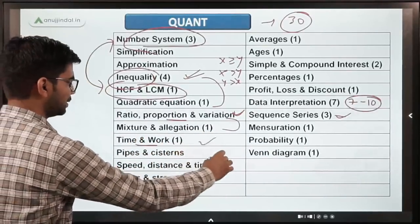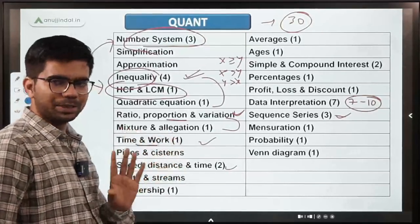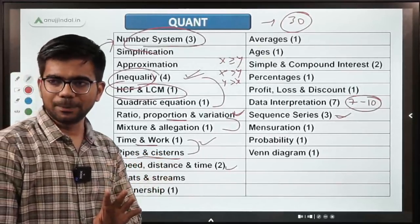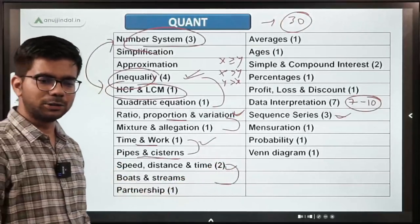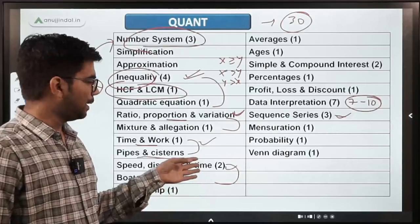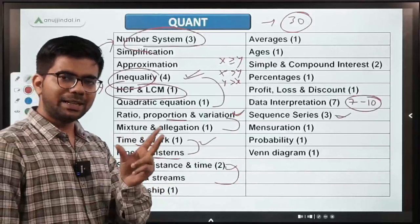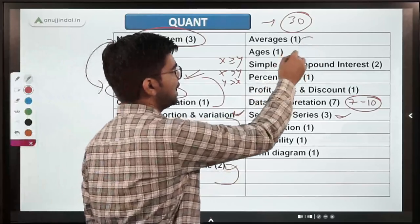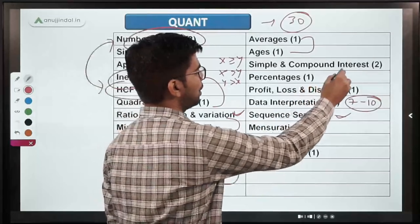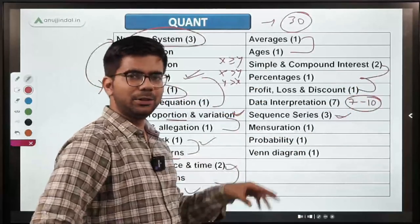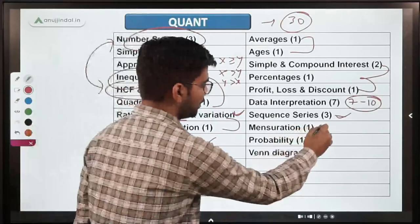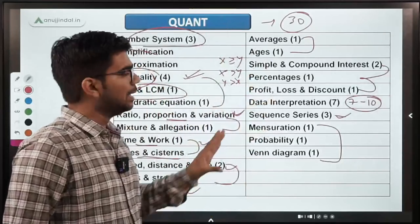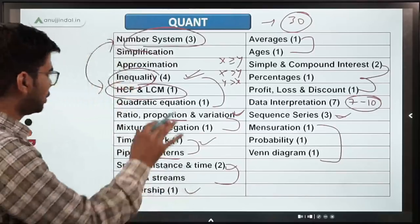Time and work and time and distance are also very important — expect 2 to 3 questions. Pipe and cistern uses the time and work concept, and boat and streams or trains connect to speed and distance. You can expect 1 or 2 questions from partnership. Averages and ages are related concepts. Simple and compound interest, percentage, and profit and loss are connected — expect 3 to 4 questions. The remaining less-important topics can be prepared last, after completing the core topics.